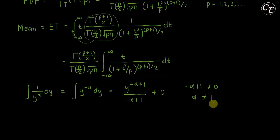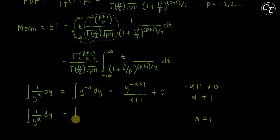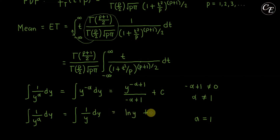When alpha is equal to 1, the integral of 1 over y raised to alpha becomes the integral of 1/y dy, which equals ln(y) plus c. Now for evaluating our integral, let y equal (1 + t²/p) and let alpha equal (p+1)/2.